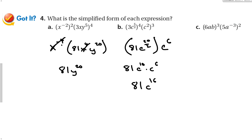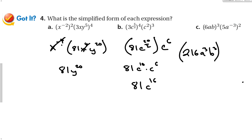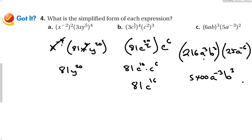For the next expression: 6 to the 3rd power is 216, a to the 3rd, b to the 3rd. Then 5 squared is 25 and a to the negative 6th. Multiplying 216 times 25 gives 5,400. For the a terms: 3 plus negative 6 gives negative 3, and b to the 3rd. We still have a negative exponent, so 5,400 stays, b to the 3rd stays, but a to the negative 3rd moves to the bottom of the fraction.